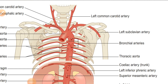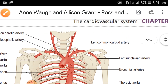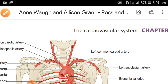Looking at the diagram of the arch of aorta branches: the first branch is the brachiocephalic artery, the second branch is the left common carotid artery, and the third branch is the left subclavian artery. These are the three branches of the arch of aorta.